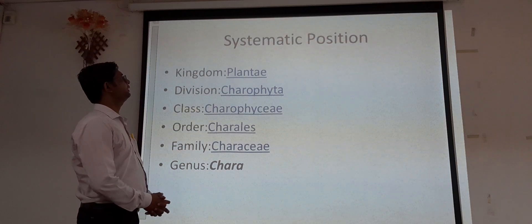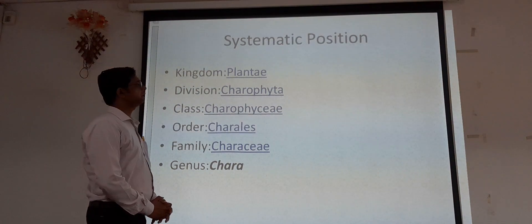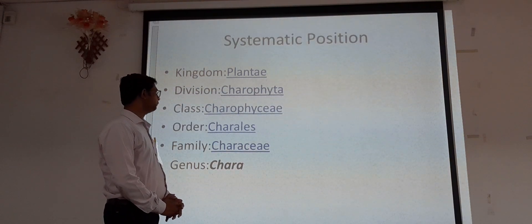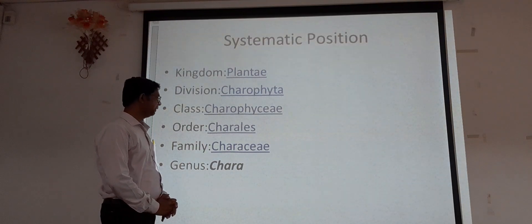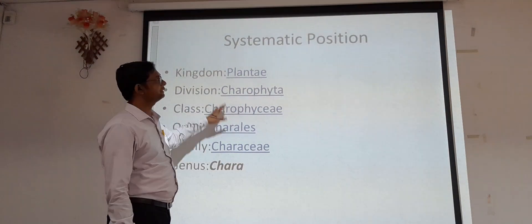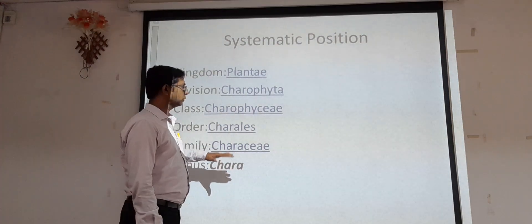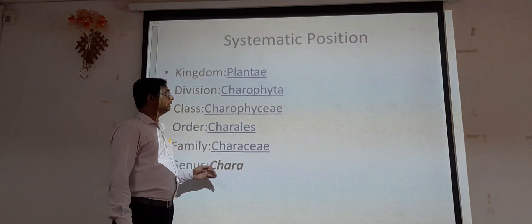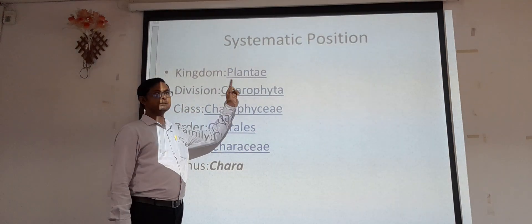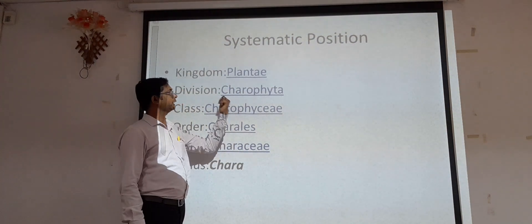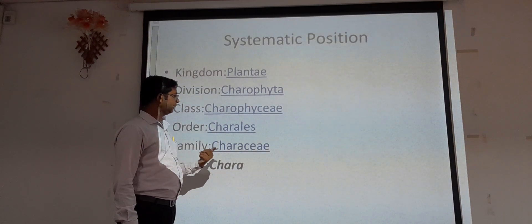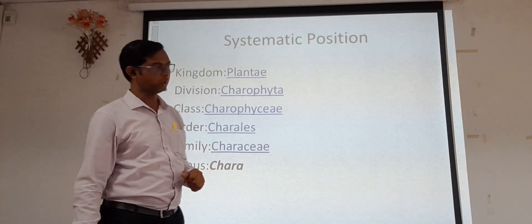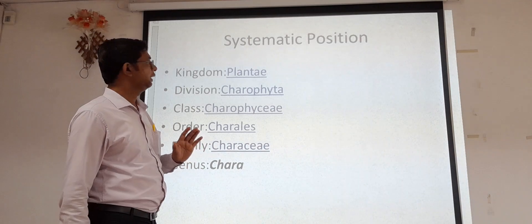Now we will discuss the systematic position. The kingdom is Plantae, division is Chlorophyta, class is Chlorophyceae, order is Charales, family is Characeae, and genus is Chara. Chara is the most studied organism in Chlorophyceae. This is the systematic position of Chara, one of the most important and widely studied organisms of the Chlorophyceae.